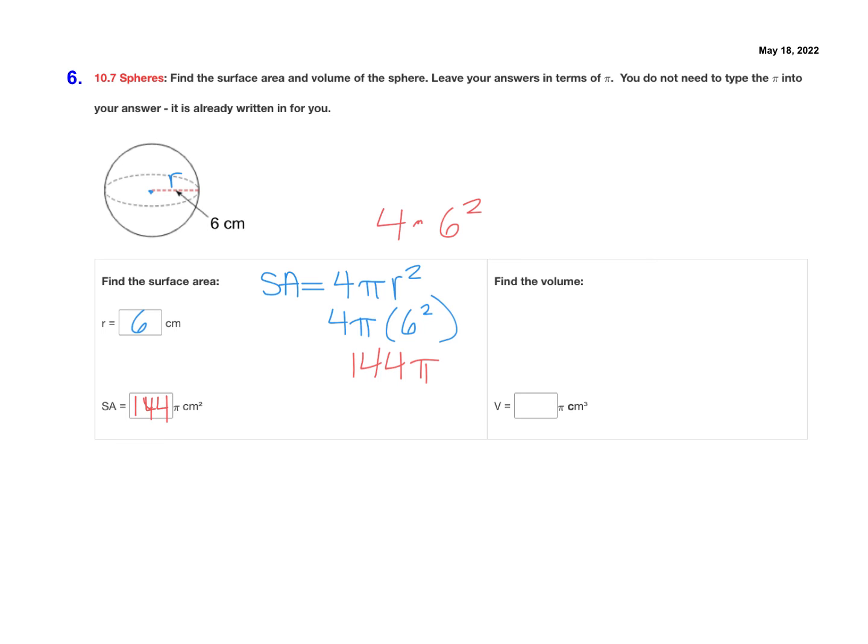Now let's calculate the volume. The formula for the volume of a sphere is volume equals 4 pi r cubed divided by 3. The radius is still 6, so we have 4 pi times 6 cubed all over 3.